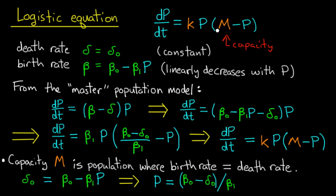Now perhaps the K and the M will be different because you've changed these assumptions delta zero and beta zero minus beta one P. But I'd still have a K and an M and I'd still have a logistic equation model.